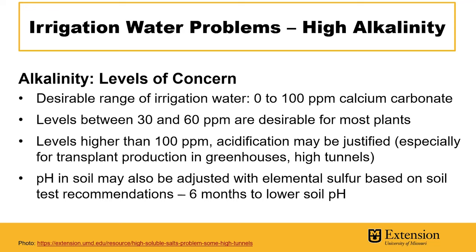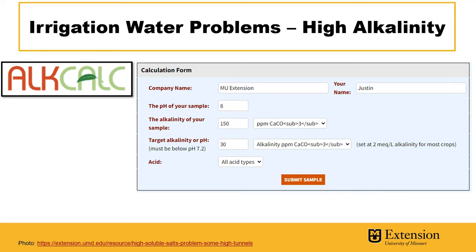Keep in mind it's going to take six months to lower your soil pH after the sulfur is incorporated. There's a great tool called Acid Calc from the University of New Hampshire that allows you to determine how much acid to inject based on the alkalinity of your irrigation water and what you want the end alkalinity to be.